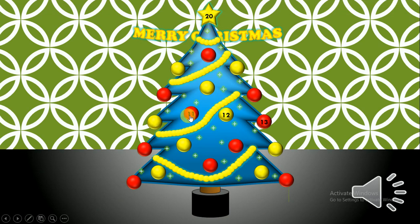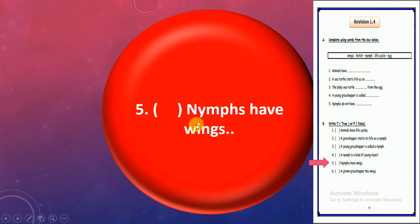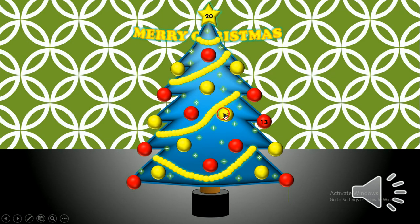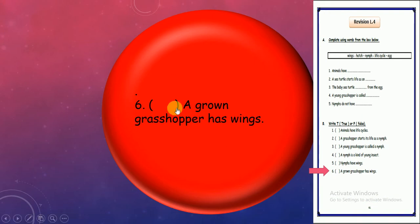Number 11, it's 5: Nymphs have wings. No, of course not. Don't have wings. Adult grasshopper or growing grasshopper have wings. Nymphs, no, don't have wings. Number 12: A growing grasshopper has wings. Of course, true. Excellent!